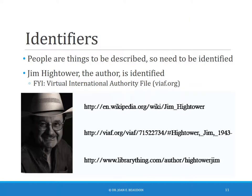Identifiers are needed for people as well. Here are three URIs for Jim Hightower, the author of the text I just showed. There are a number of different ways to identify authors, and the most common one used for the semantic web is the Virtual International Authority File, or VIAF.org, which is actually hosted at OCLC. Here I'm providing three URIs, all representing identifiers for this single author, Jim Hightower.